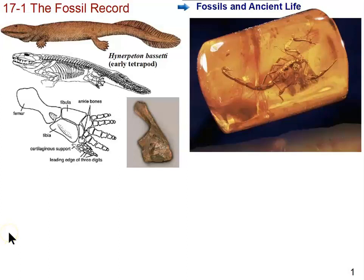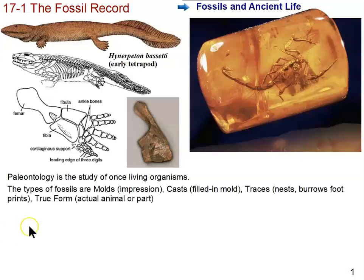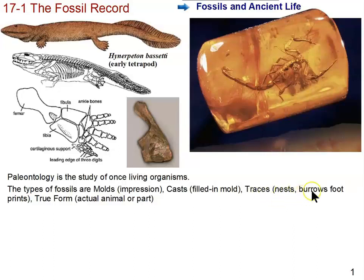Paleontologists depend primarily on fossils, and there are different types of fossils. The main types are molds, which are impressions — for example, you may find the impression of a leaf. Casts are molds that have been filled in. Traces include things like a trail where a worm crawled through mud. Nests, burrows, and footprints are also fossil types. Dinosaur footprints have helped us know that certain dinosaurs were bipedal. A recent article described a fossilized turtle apparently crushed by a sauropod, based on tracks found nearby.